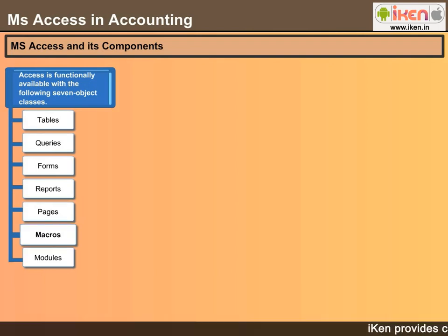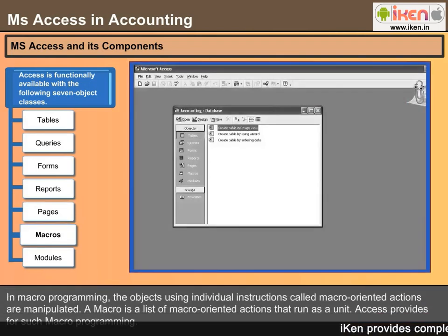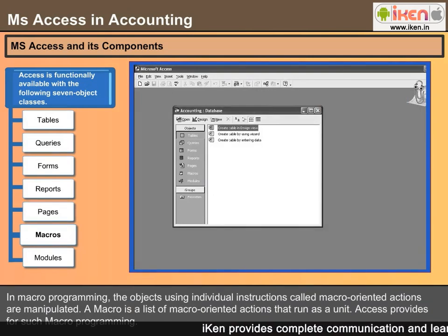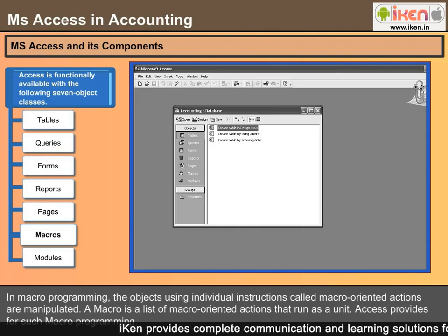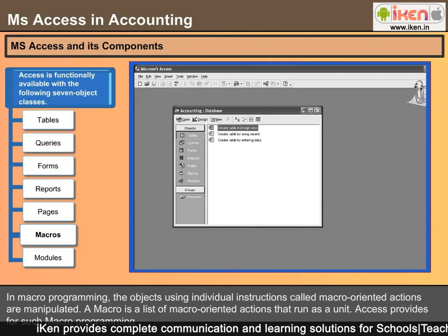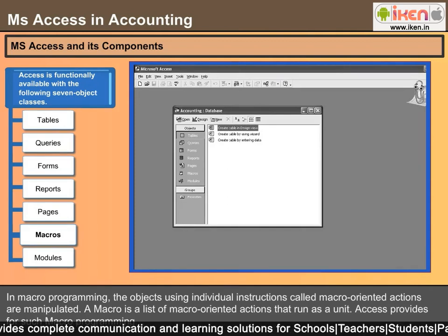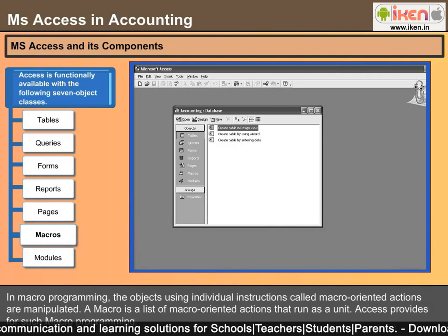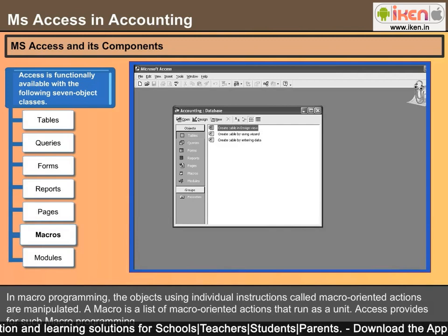Macros: In macro programming, objects are manipulated using individual instructions called macro-oriented actions. A macro is a list of macro-oriented actions that run as a unit. Access provides for such macro programming.